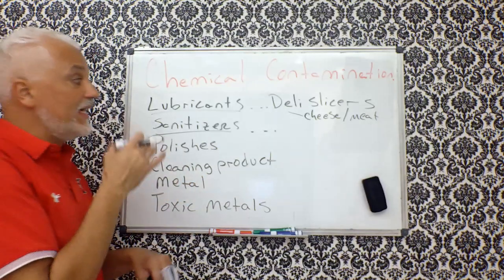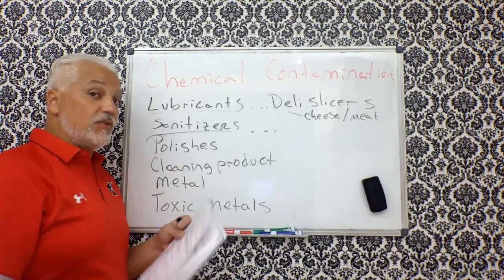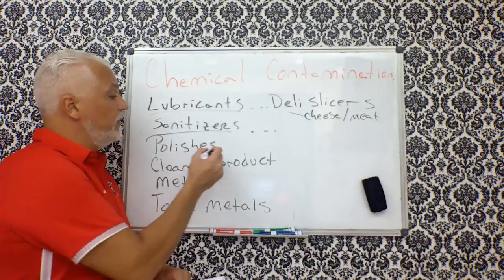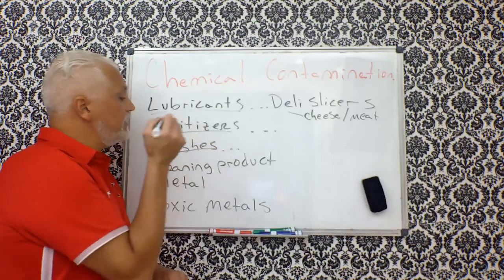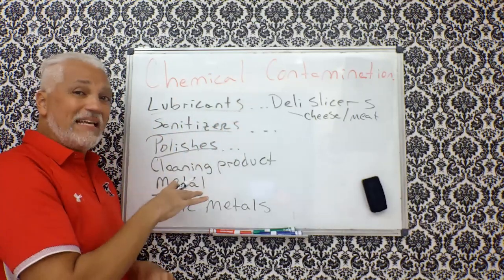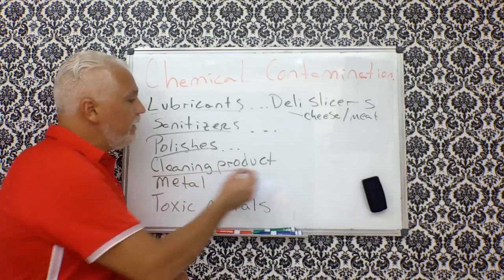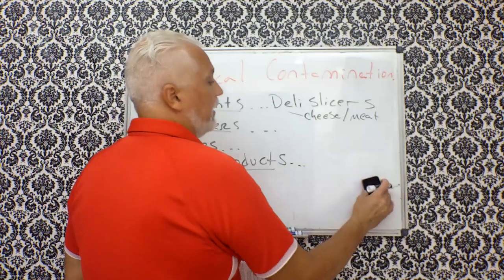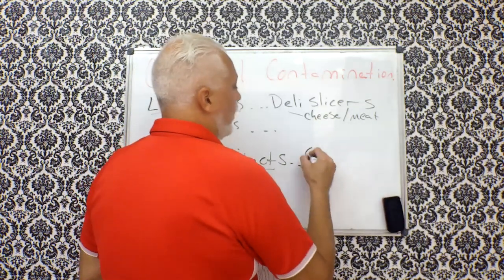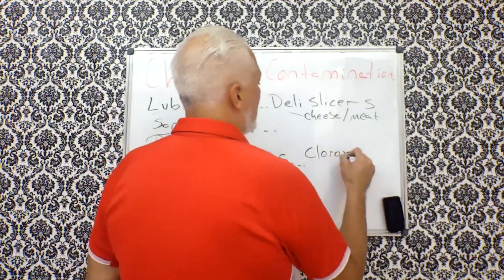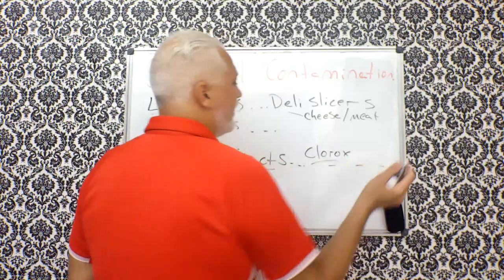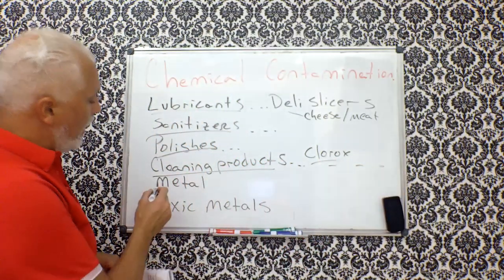Sanitizers. When you're cleaning and sanitizing, if any traces are left, they need to be safe for human consumption. Polishes. We're talking about whether it's for window or stainless steel metals, stovetops, things like that. Cleaning products. We're talking about some well-known names like Clorox. So think of those cleaning products.